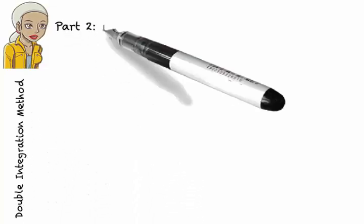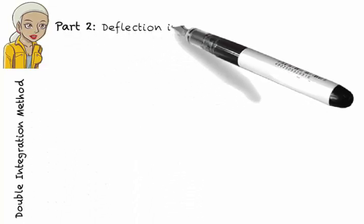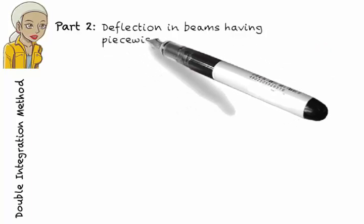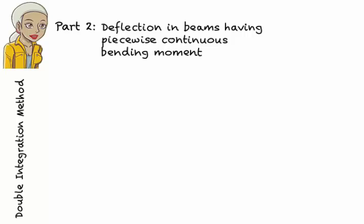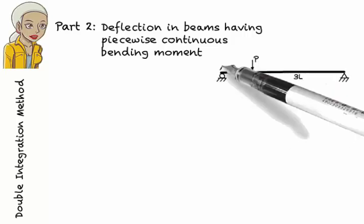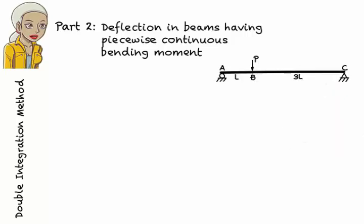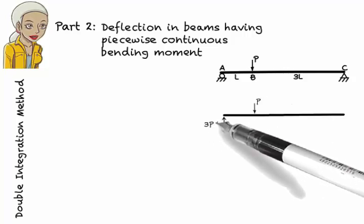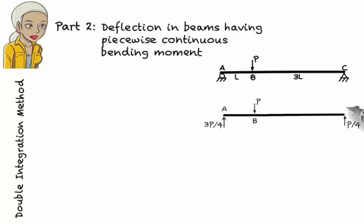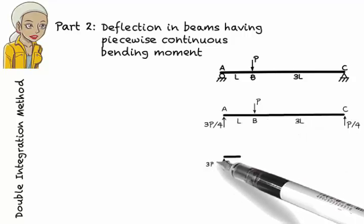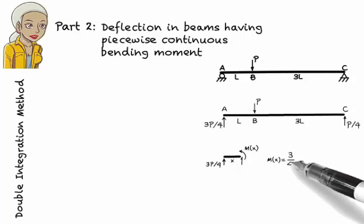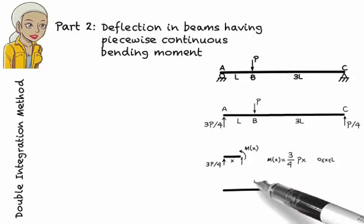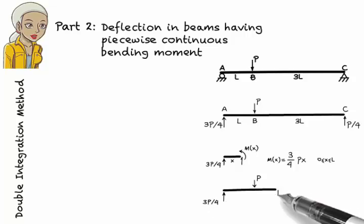This example illustrates how to use the double integration method to find a deflection equation for a beam with a piecewise continuous bending moment. If a simply supported beam is subjected to a concentrated load, then bending moment cannot be expressed using a single equation. In this case, we need two equations to correctly represent bending moment — one moment equation for the left segment of the beam, and another for the right segment.